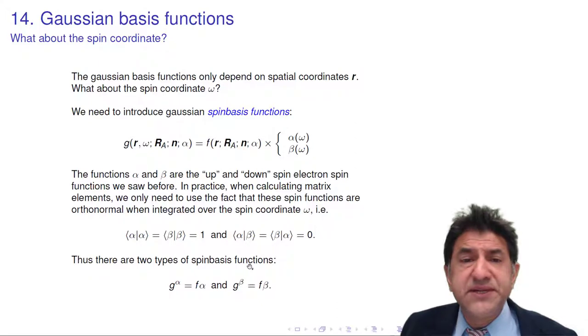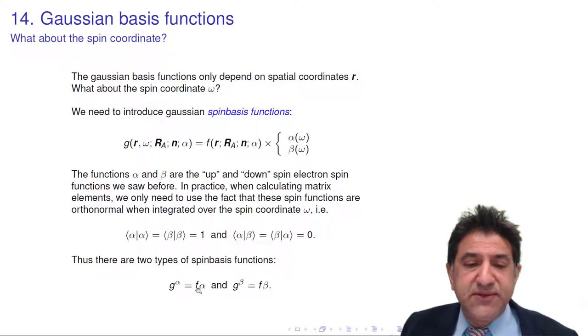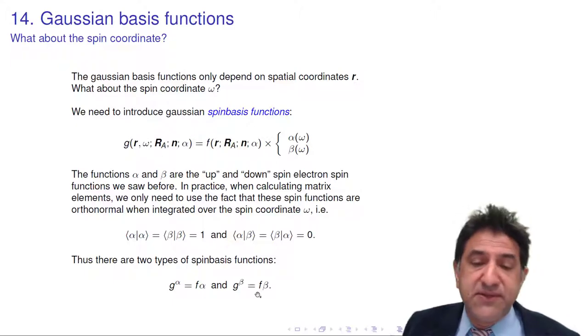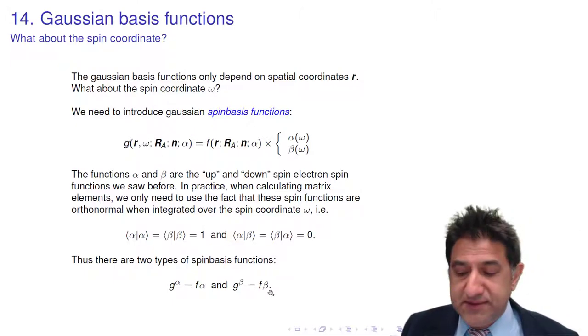So there's two types of spin basis functions. Just to summarize, there's the G alpha spin basis function, which is an F basis function spatial times an alpha spin function, and a G beta spin basis function, which is an F spatial function, could be Gaussian, could be sine, whatever, times a beta spin function.